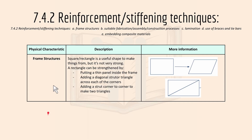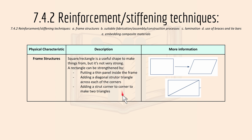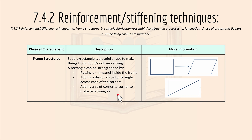Moving on to 7.4.2 — reinforcement or stiffening techniques. We'll look at frame structures. A square or rectangle is a useful shape to make things from but it's not very strong. The rectangle can be strengthened by putting a thin panel inside the frame, adding a diagonal, a shorter triangle across each of the corners, or adding a corner brace to make two triangles.